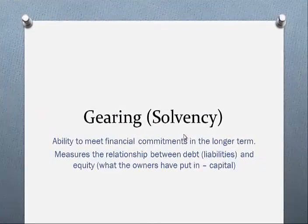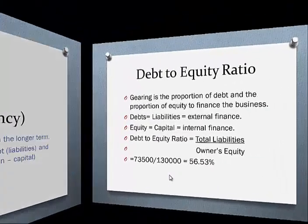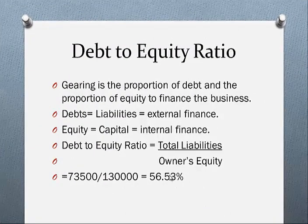Now let's turn to gearing, also called solvency. Solvency is how solvent a business is in the longer term — can it survive? It talks about the ability to meet commitments in the longer term. In particular, it measures the relationship between debt (we call liabilities) and equity — what the owners have put in, in other words the capital that they put in.